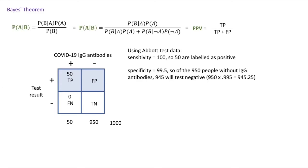For specificity, the Abbott test is 99.5%, which is also very high, so if we use that, if the 950 people without IgG antibodies will get 945 people who will correctly test negative. And then we can subtract to get the people who end up being the false positives.